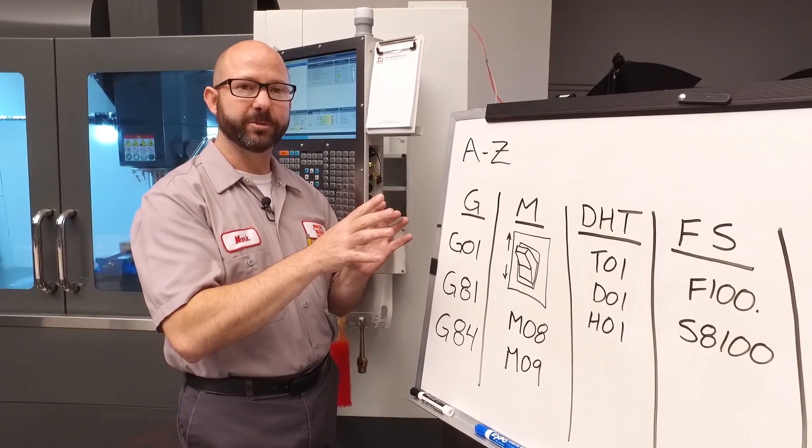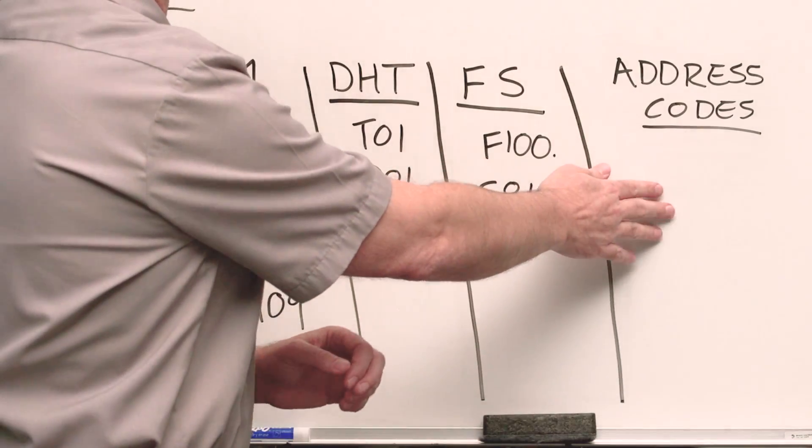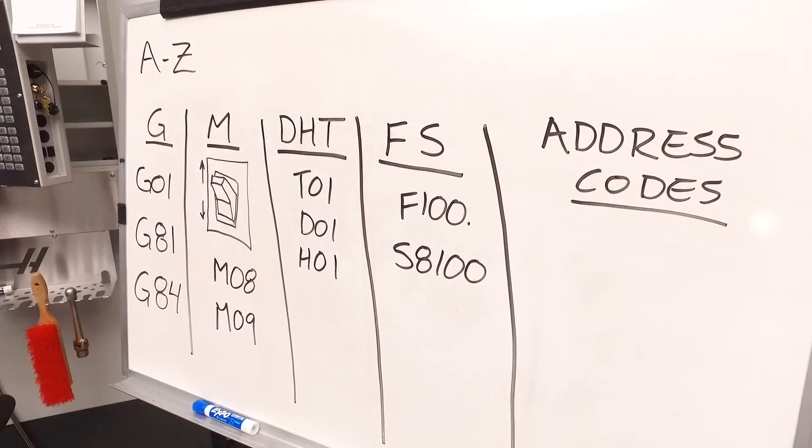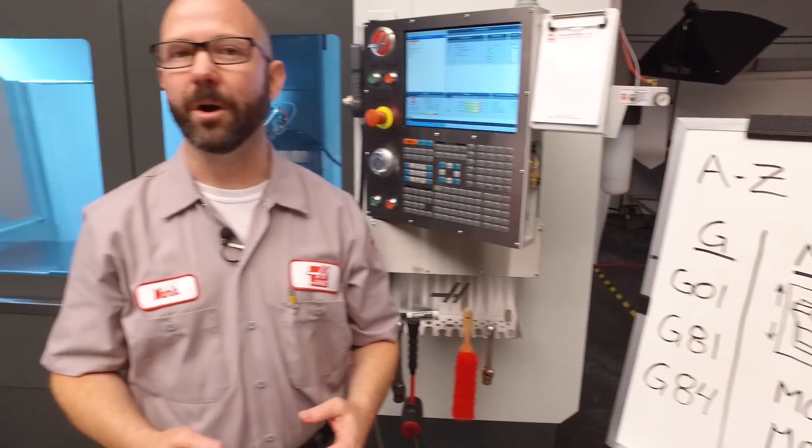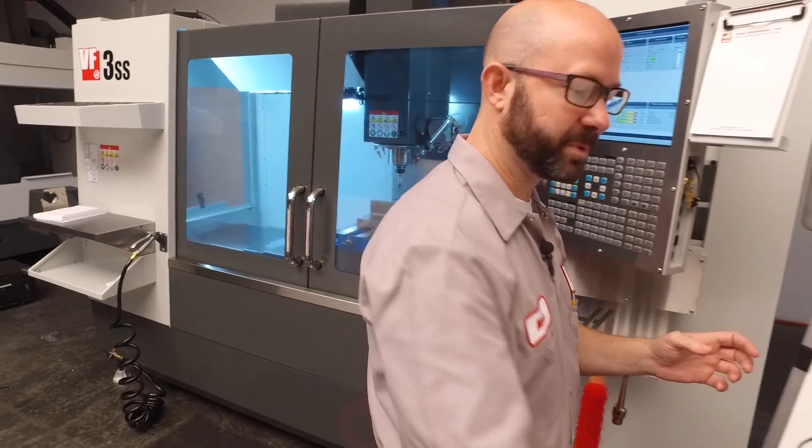Now we can take all of those other letter codes that we haven't talked about, and file those away underneath address codes for now. Now we have tons of G-codes that perform all kinds of tasks. Each of those G-codes has been placed into a group with other like-minded G-code, G-codes with similar functionality. Let me clear the board and give you an example of some of those G-code groups.